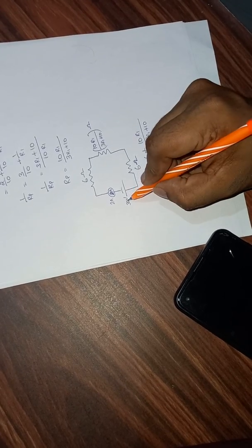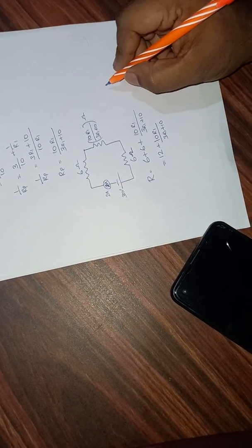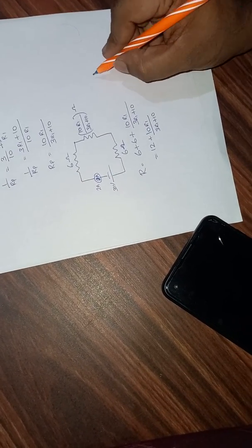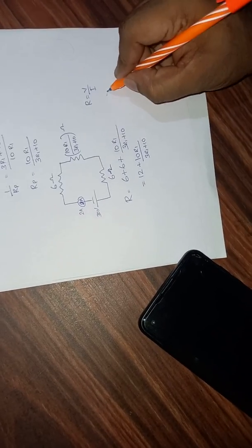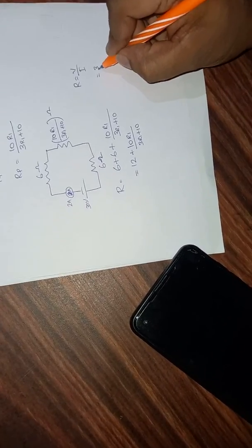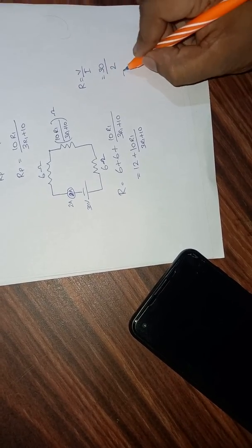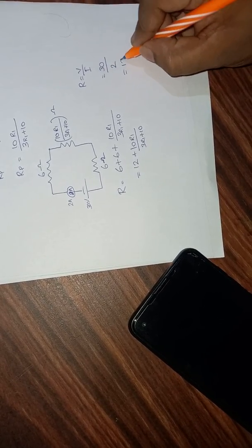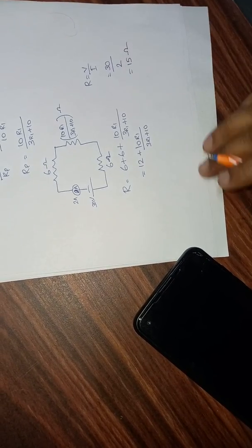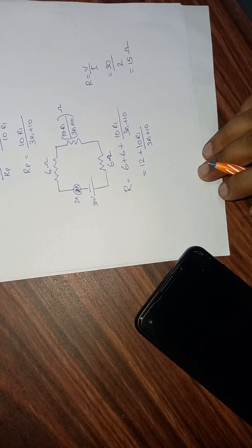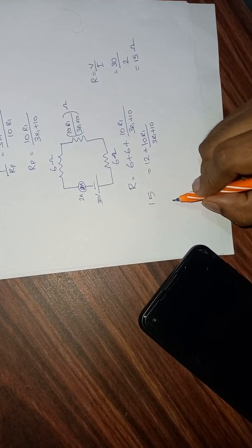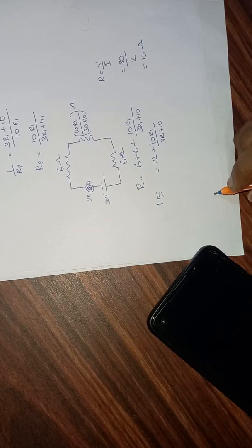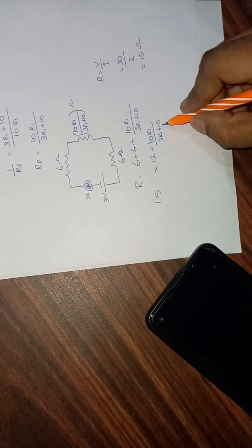To find the total resistance in the circuit, we use the potential difference and current values. Using R = V/I, we get 30/2 = 15 ohms. So the total resistance is equal to 15 ohms.